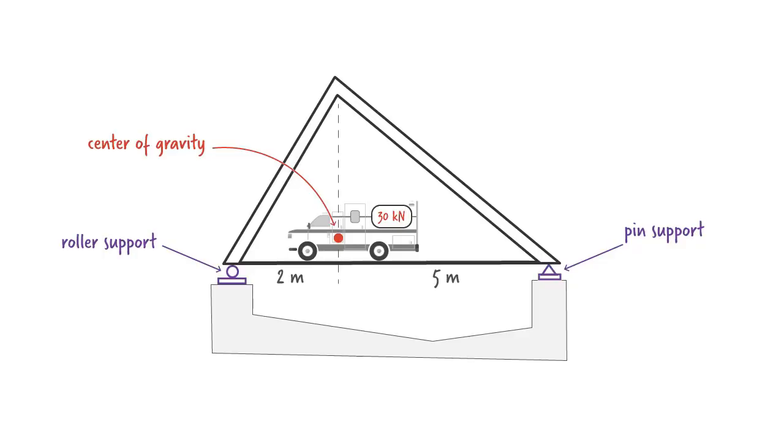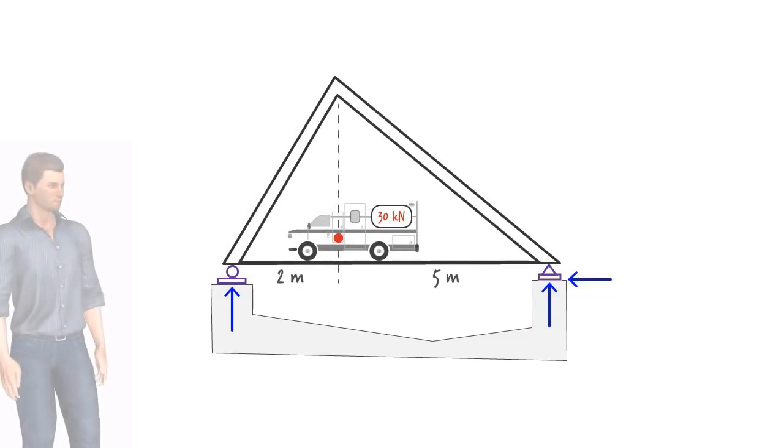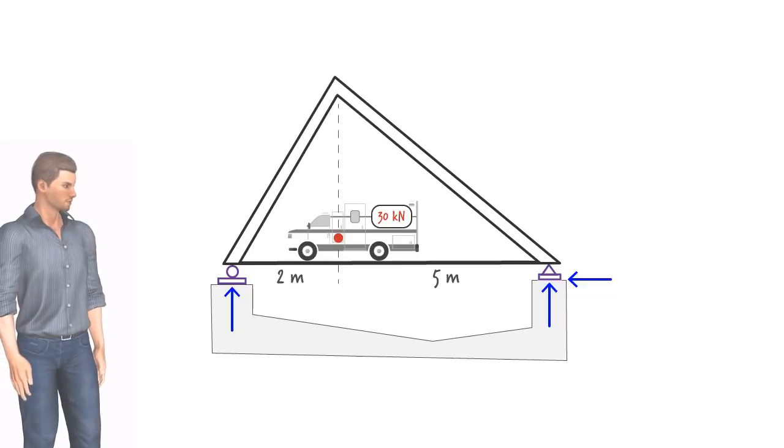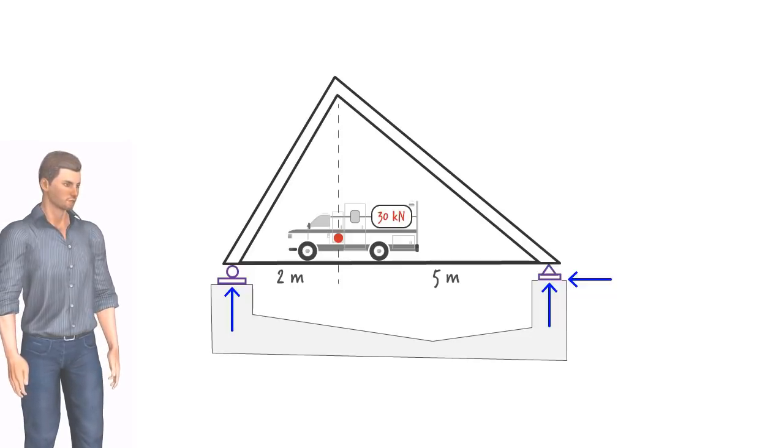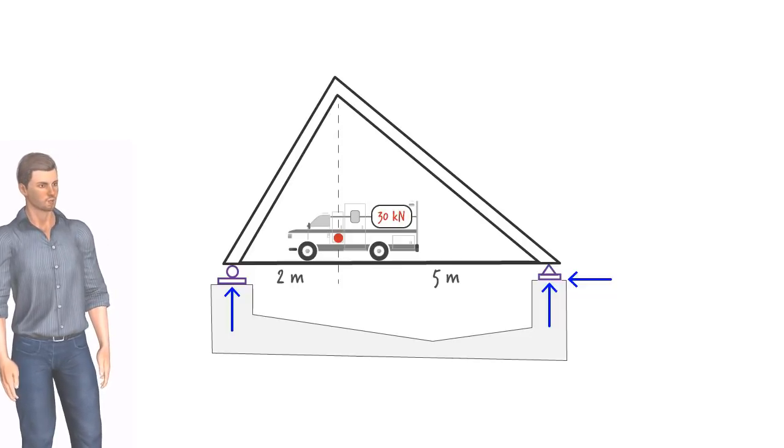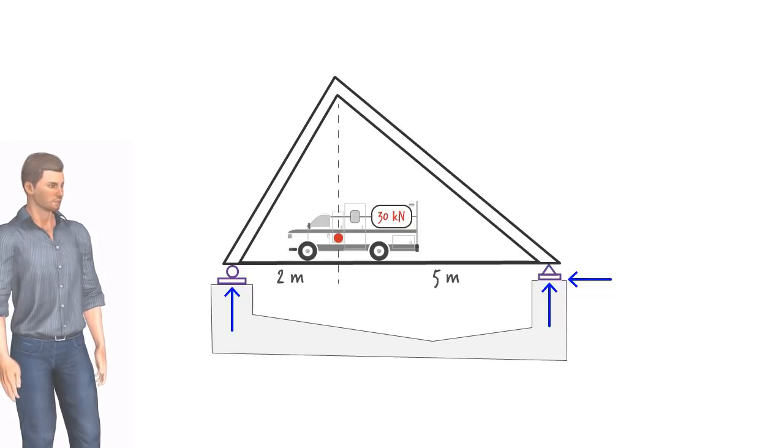according to Newton's third law, equal and opposite reaction forces develop at the supports. We refer to those forces as support reactions. In dealing with structures, we often need to calculate their support reactions. So our free body diagram must include these reaction forces.